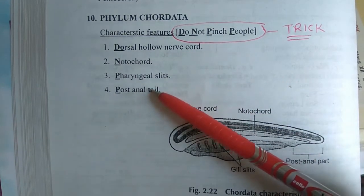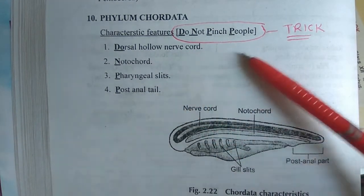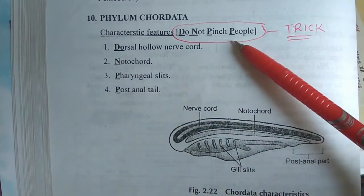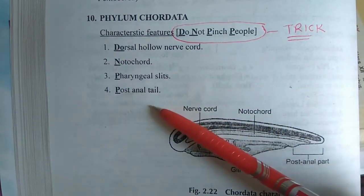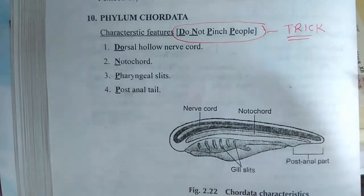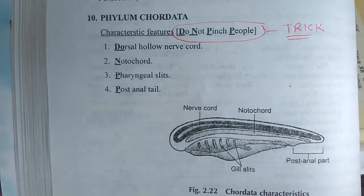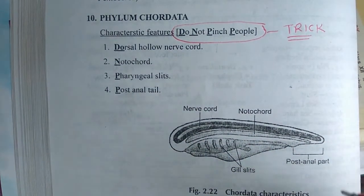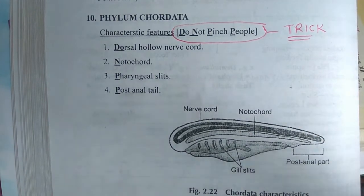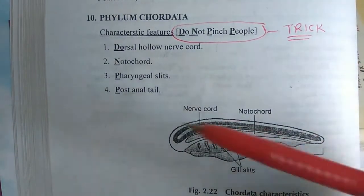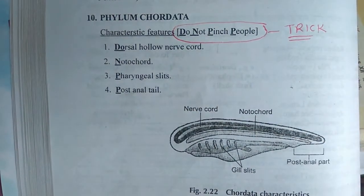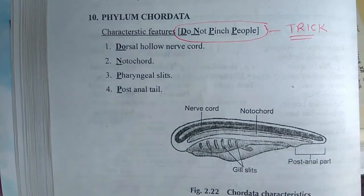And P for post anal tail. It's quite simple. So let's see where these structures are present.